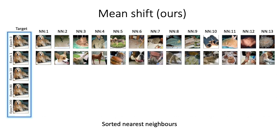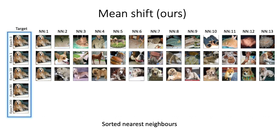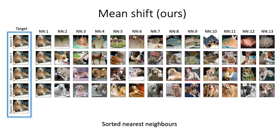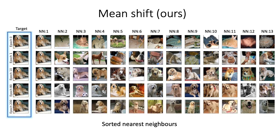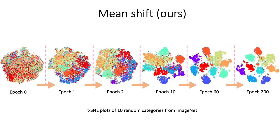At the end of the first epoch, the NNs are more semantically related. At the end of just the 10th epoch, the model has learned to group the broad category of dogs together. The NNs then start getting more refined and closer to the target in terms of fine-grained category, shape, pose, and color. At the end of training, NNs have similar pose and color as the query image. We can also see this grouping behavior in a TSNE plot, visualizing representations of images from 10 randomly sampled categories at different epochs. As training progresses, the representations become more semantically grouped.